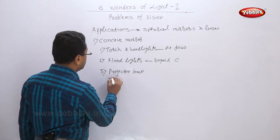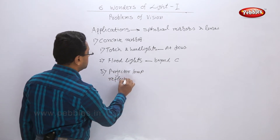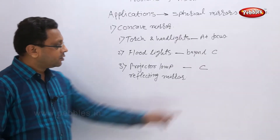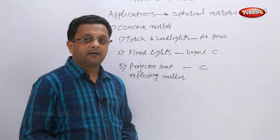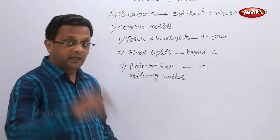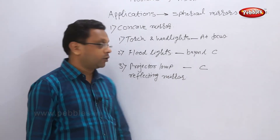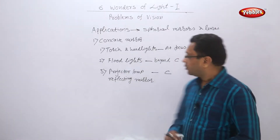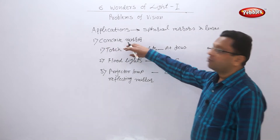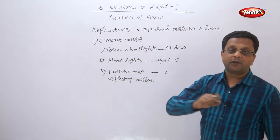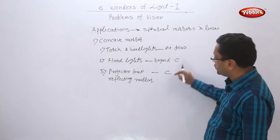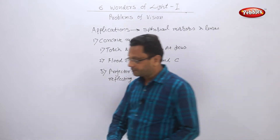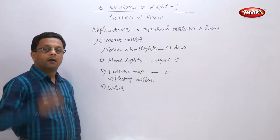The third application is projector lamp reflecting mirrors. In this case the source is kept exactly at the center of curvature, so we will get an image of the same size. Because for a projector we need the image of the same size, we keep the light source at the center of curvature. We have already seen the diagrams for all these positions.